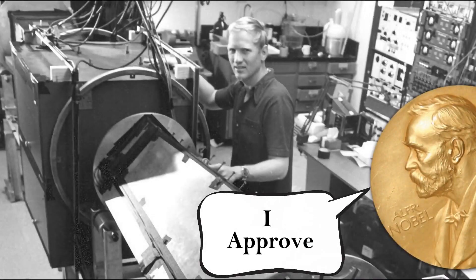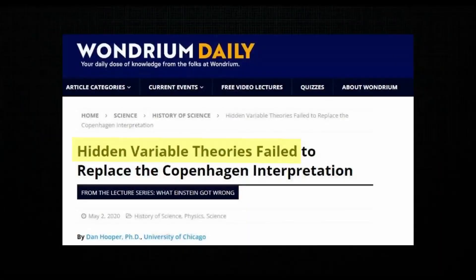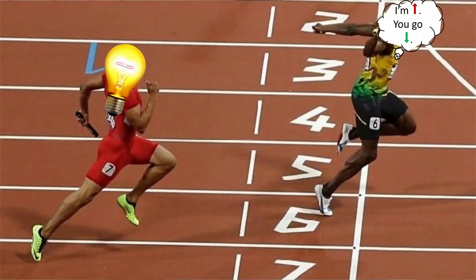However, after rigorous experiments, scientists refuted the hidden variables theory. So what about the recognized faster than light loophole?